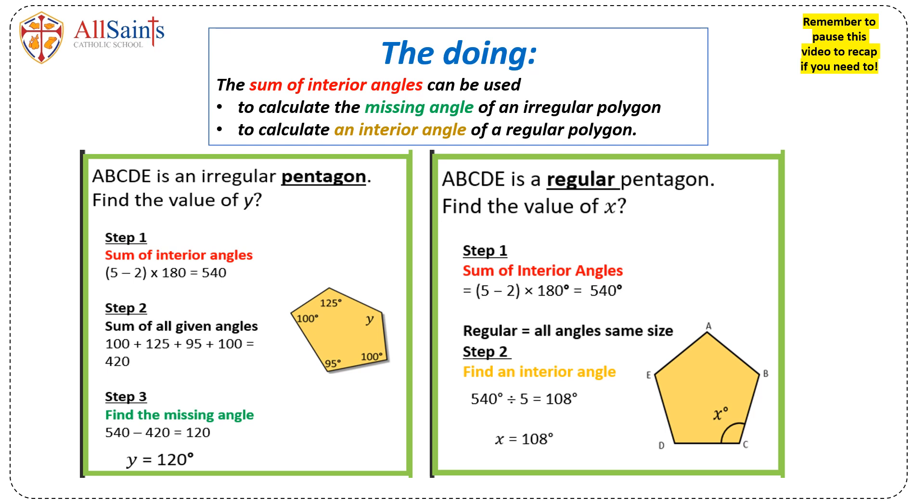In this example of a pentagon, the sum of interior angles is 540 degrees. To find the missing angle, add all the angles that are given to you and take it away from 540 to give you the remaining angle, which is 120 degrees.